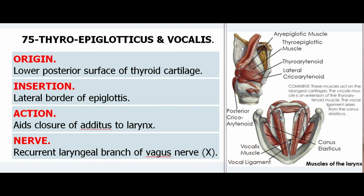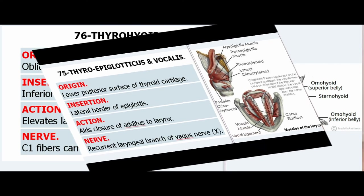75. Thyroepiglotticus. Origin: Lower posterior surface of thyroid cartilage. Insertion: Lateral border of epiglottis. Action: Aids closure of aditus to larynx. Nerve: Recurrent laryngeal branch of vagus nerve (X).